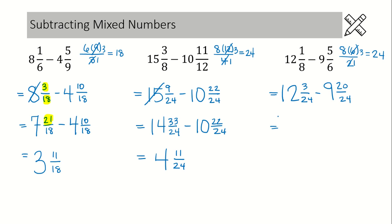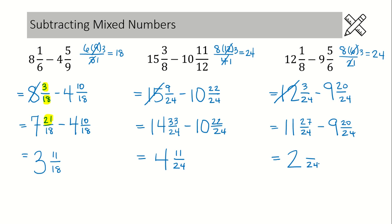Before I subtract, I check: my numerator on the first fraction is smaller than the numerator on the second, so I'm going to have to borrow — 12 becomes 11. I write in the denominator of the first fraction, write down the rest of the question, then figure out the numerator by looking at the fraction directly above and adding the two numbers together: 3 plus 24 gives 27. Now I can subtract: 11 minus 9 is 2. The denominator stays as 24, and then 27 minus 20 is 7.